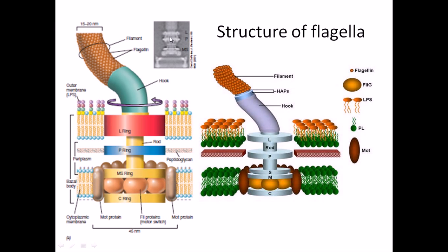If you look at gram-negative bacteria, you can see three layers in their membrane: the inner membrane, a very thin peptidoglycan layer, and the outer membrane. Between the peptidoglycan and the inner membrane, and between the peptidoglycan and the outer membrane, we have the periplasmic space. The rings are embedded onto the membranes: the L ring and MS ring are embedded onto the outer membrane and inner membrane respectively, while the P ring is attached to the peptidoglycan layer.